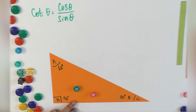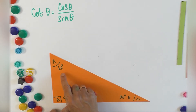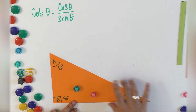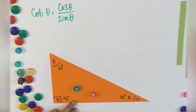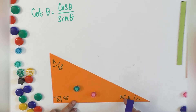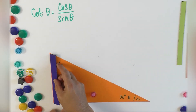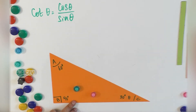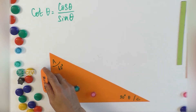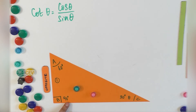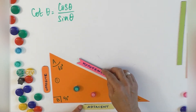Now let the child understand that whenever we use the angle 30 degrees or angle 60 degrees, the triangle satisfies some special characteristics. What is that? In the case of the reference angle becoming 30 degrees, the opposite side is one unit. The side opposite to the reference angle is always called the opposite. The base becomes the adjacent, and then side AC is the hypotenuse.